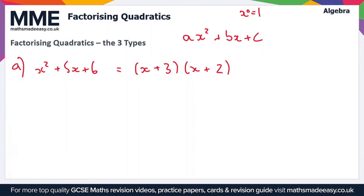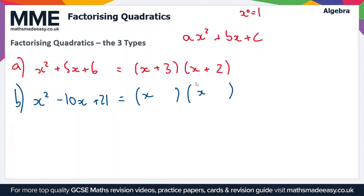Subtype B is where b is negative and c is positive. An example is x squared minus 10x plus 21. Again we need two sets of brackets each with x, but this time we need two numbers which multiply to give 21 and add together to give minus 10. We need two negative numbers, because a negative times a negative gives a positive, but adding two negatives stays negative. So it's x minus something in both brackets. The factors of 21 we need are 7 and 3, so minus 7 and minus 3 add to give minus 10.